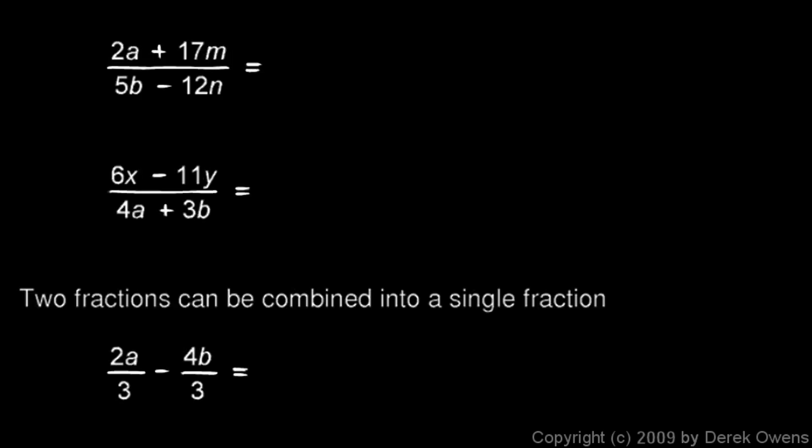Continuing our examples here: 2a plus 17m over 5b minus 12n. We want to split that up into two fractions. Well, it would be 2a over the denominator plus 17m over the denominator. So we write it like this: 2a over 5b minus 12n plus 17m over 5b minus 12n.